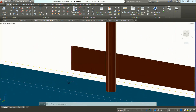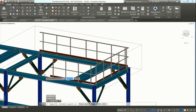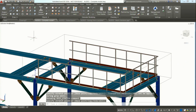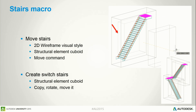You also have these grips — a small sphere grip — and you can take it and move it. If you want to extend your railing to the top of the column, just take the sphere, move it, and the railing is extended automatically. In Advanced Steel, we also have tools for stairs. You can create stairs, and if you want to move them you just display the cuboid — you need to be in a 2D wireframe visual style. It's easy to move and copy. It's a nice way to create switchback stairs: create one, copy it, rotate it, move it, and you get the result quite easily.